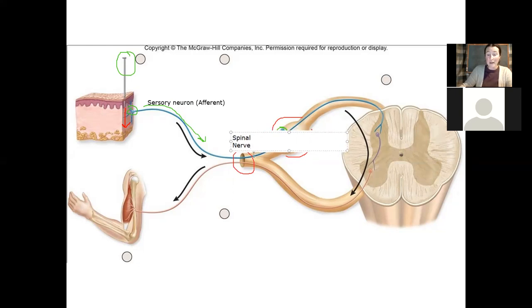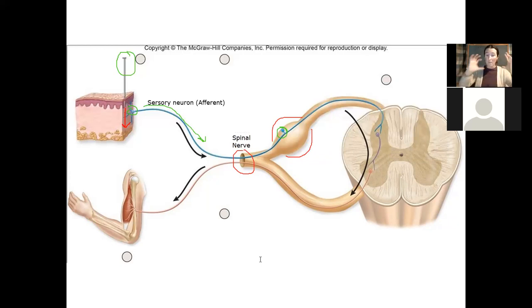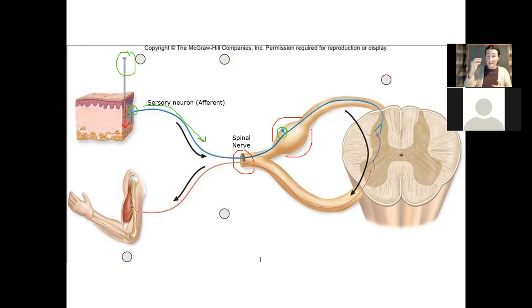The spinal nerve has afferent and efferent information — sensory information and motor commands. Both are going to be traveling to and from the central nervous system through these spinal nerves. The spinal nerves are named according to where they exit the spine — C1, C2, T3, T5 — and they carry both sensory and motor information.